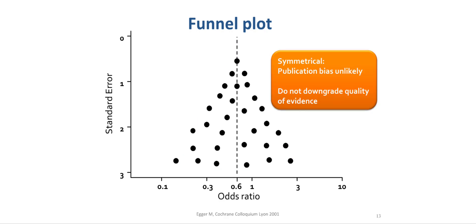This results in an inverted funnel when there is an absence of publication bias. In this case, the best estimate of effect may be an odds ratio of 0.6, with studies effect measures symmetrically distributed around the best estimate of effect. Under such circumstances, one would not downgrade the quality of evidence.